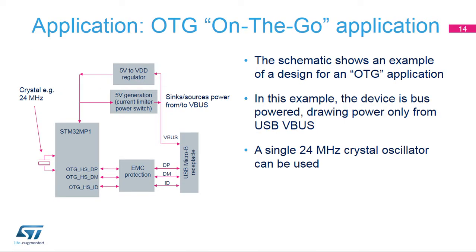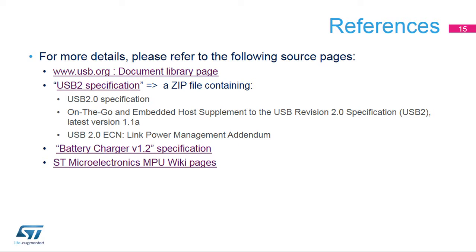Here is an application example of a USB OTG or on-the-go application. Power can be drawn directly from the USB V-Bus signal when in device mode. The V-Bus should be generated locally when in host mode. A single crystal oscillator, for example 24 MHz, is needed outside. For complete USB specification documents, please refer to USB.org. The USB 2.0 document homepage has a zip file containing the USB 2.0 and OTG 2.0 specifications and an ECN for LPM. Please also refer to the MPU wiki pages.